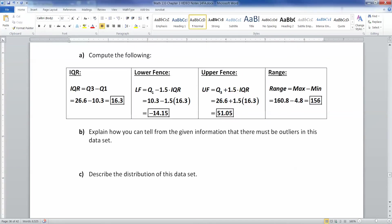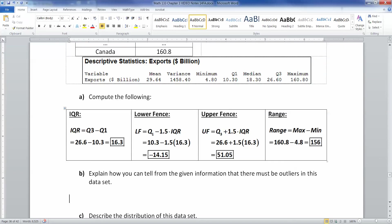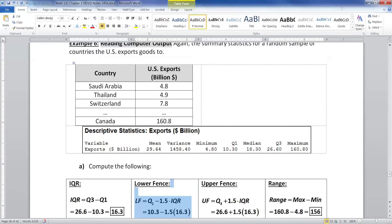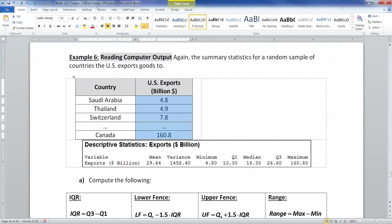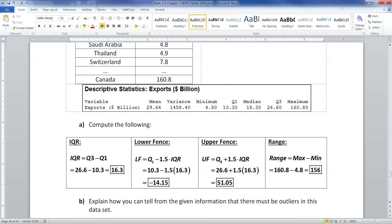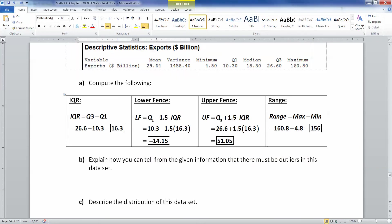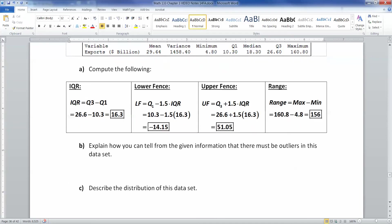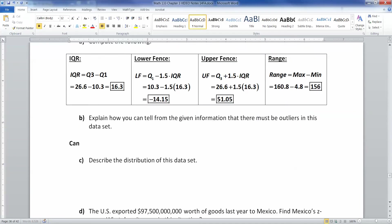Now, how can you tell from the given information that there must be outliers in this data set? Well, there's no outlier on the low side, because nothing's going to be lower than negative 14. This was a ratio data set. It's impossible to have negative numbers of, or negative billions of dollars of imports, or exports. This is exports. But we could have an outlier on the high side, and we do. We can see right away that Canada is our maximum, which is 160.8, which makes sense. We share a very large border with them. And so therefore, they're an outlier. So Canada, the maximum, which we happen to know is Canada. It might not always be given to us in the data set information, is above the upper fence.